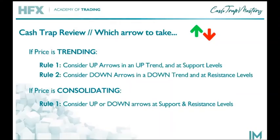To utilize Cash Trap 2.0, we keep this very simple. Once again, if price is trending, we consider up arrows in an uptrend and at those support levels. Rule number two is to consider down arrows in a downtrend and at resistance levels. If you identify that price is in consolidation, we simply have one rule, which is to consider up arrows or down arrows at support and resistance levels.